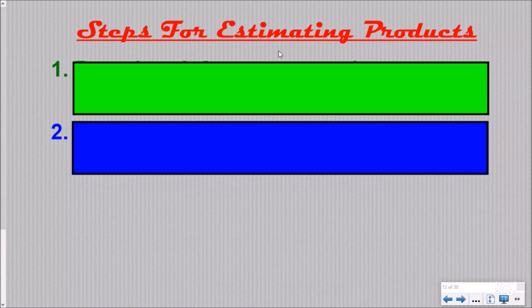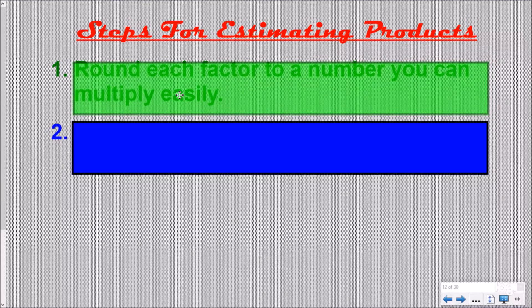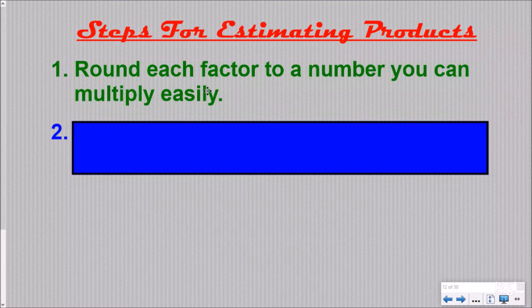So our steps for estimating products are very similar to when we were estimating whole numbers. If we were multiplying, dividing, adding, or subtracting. And the first one is you want to round each factor to a number you can multiply easily. Factor being the numbers you're multiplying together.